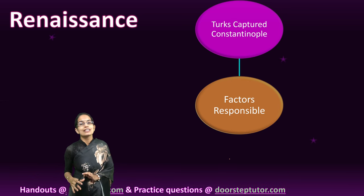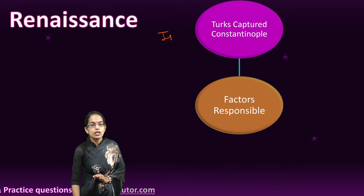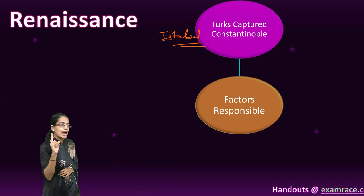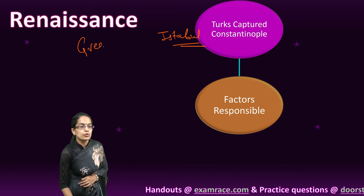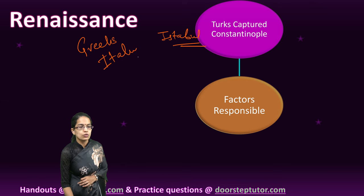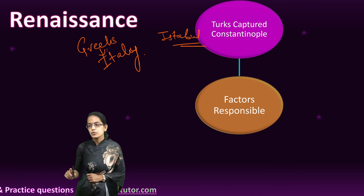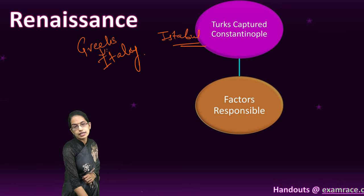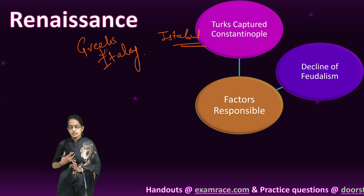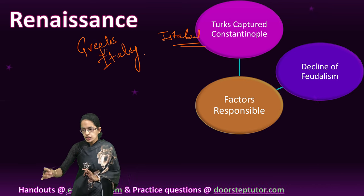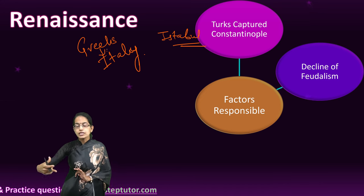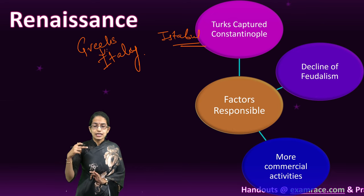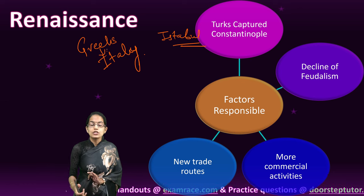The first factor was the capture of Constantinople by Turks. Constantinople — present-day Istanbul in Turkey — was the region where Greeks actually lived. These Greeks fled to the regions of Italy, and in Constantinople, it was mainly the Turks who came to power. The Greeks who moved to Italy took manuscripts and started to impart learning there. The next was the decline of feudalism. With the decline of feudalism, the idea of learning and development of new avenues for trade started, leading to more commercial activities and new trade routes.